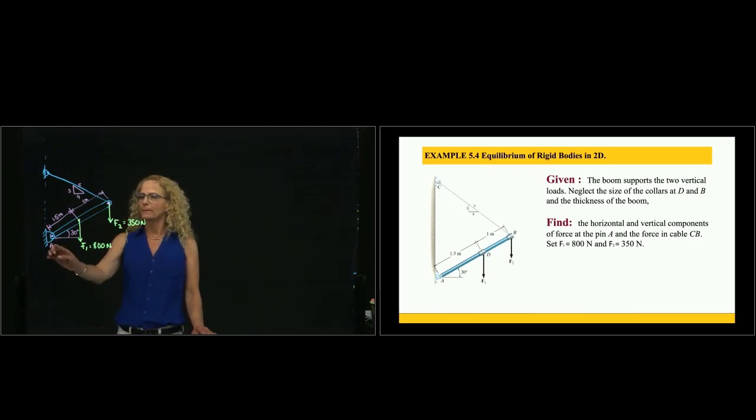So here we have a beam that is supported by a pin at A. A pin can restrict two motions, which is right or left, or up and down. Therefore, it's restricted to two degrees of freedom, therefore has two reactions.